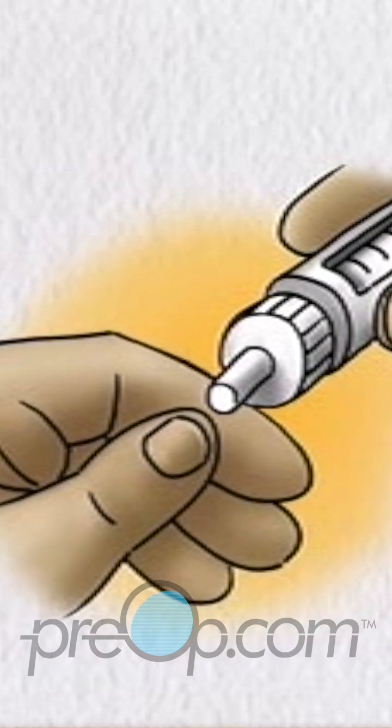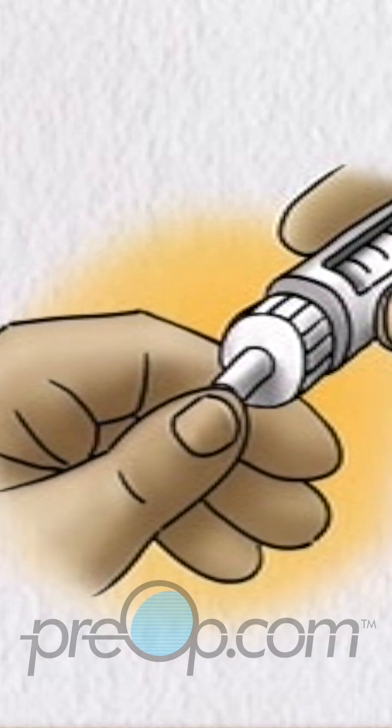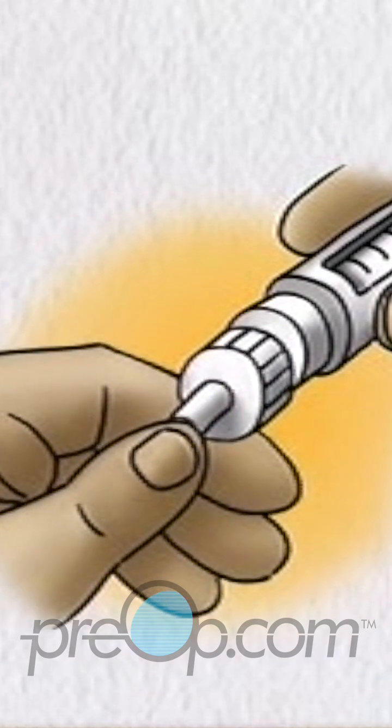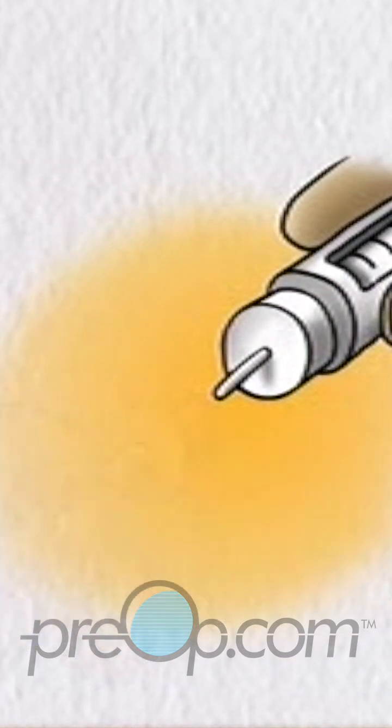Pull the inner shield off the needle and discard it. Hold the pen upright and tap the cartridge holder to enable air bubbles to escape through the needle.